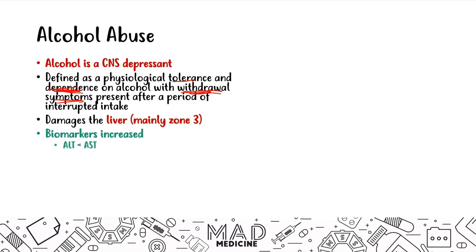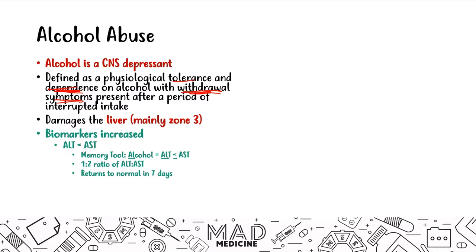The first biomarker is AST, which is going to be higher than ALT. A helpful way to remember it: think of alcohol, put ALT first, and ALT is less than AST — meaning AST is higher by a ratio of 2:1, so AST is two times the amount of ALT. This normally returns to normal within 7 days. For a longitudinal measure, use serum GGT — serum gamma glutamyl transferase — which measures liver damage over the long term and returns to normal in 2 to 6 weeks.